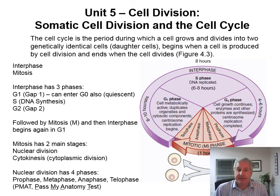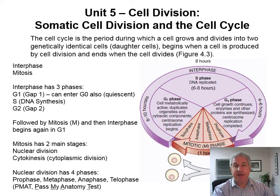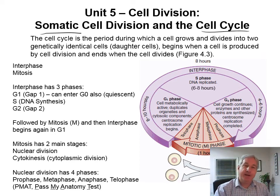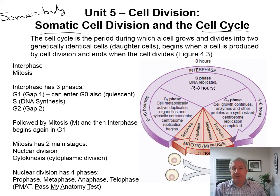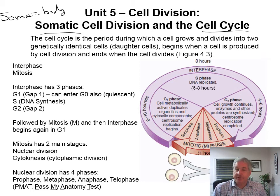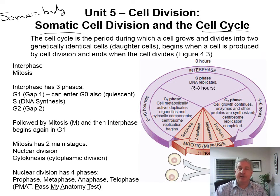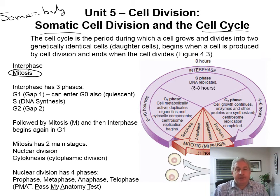The last thing we're going to talk about is cell division — specifically somatic cell division and the cell cycle. Somatic means body, so we're talking about body cell division. We're not going to talk about germ cells — sperm and eggs — which would be meiosis. We're going to talk about somatic cell division, which is called mitosis.